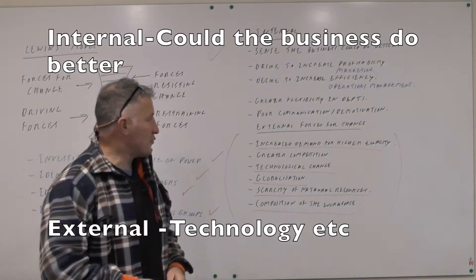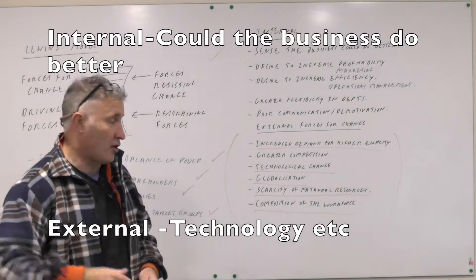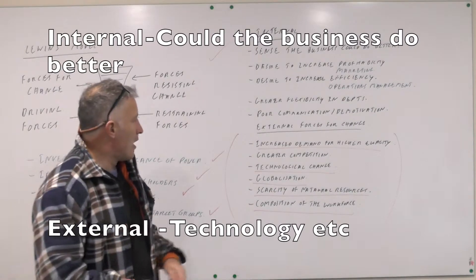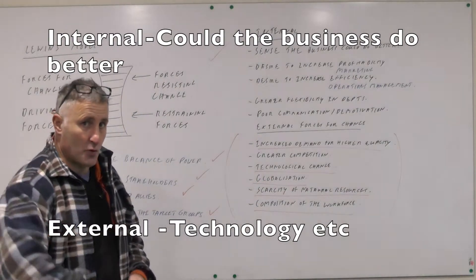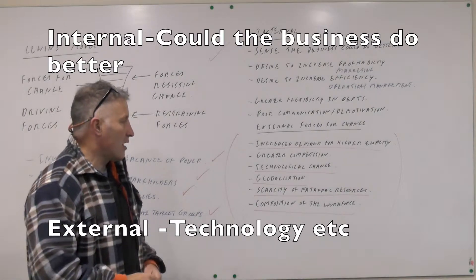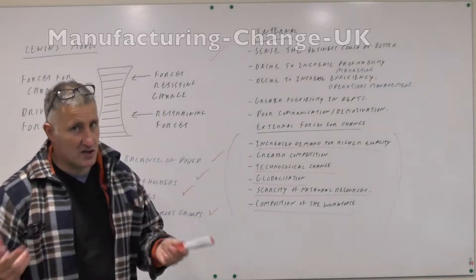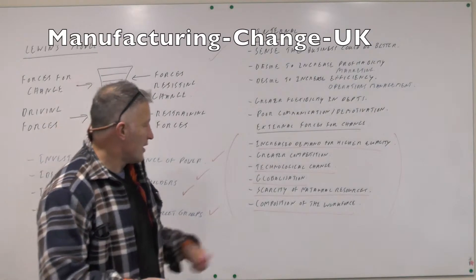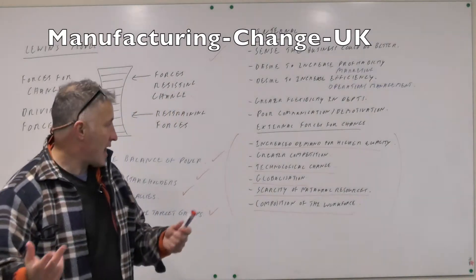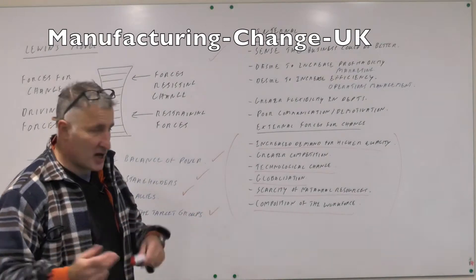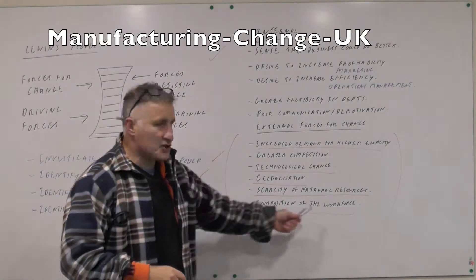You can bring consultants into your firm and they'll be looking at the culture of the organisation and deciding how it can move forward. You also have external factors for change — maybe you need to produce greater quality. Think Apple, Samsung, and the great competition in the marketplace. Toyota, Volkswagen, JLR. Technological change — 3D printing is going to change the whole manufacturing environment. Globalisation, scarcity of natural resources, climate change legislation, and the composition of the workforce.